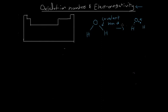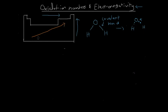Electronegativity is a property of every atom on the periodic table. Every atom has an electronegativity that can be measured or compared. What we know is that electronegativity increases as we move in this direction of the periodic table and as we move up. So electronegativity increases in this direction - up here is most electronegative, and down here is the least electronegative.